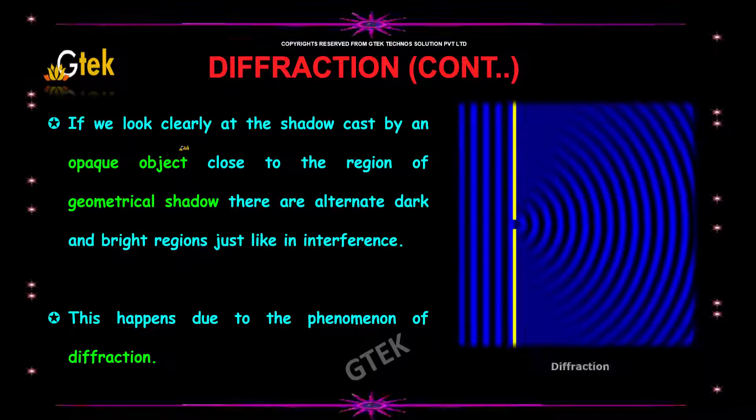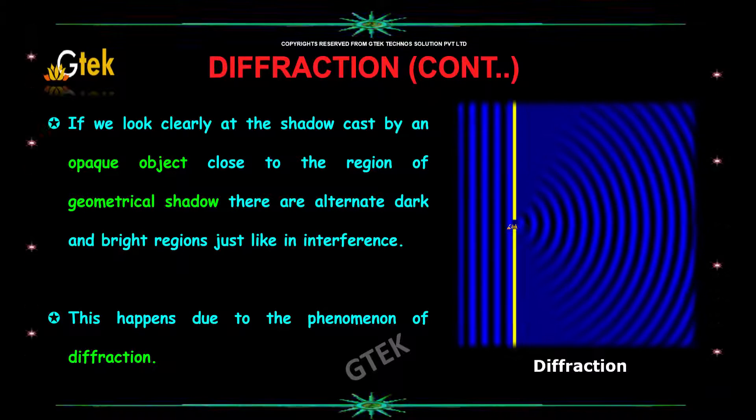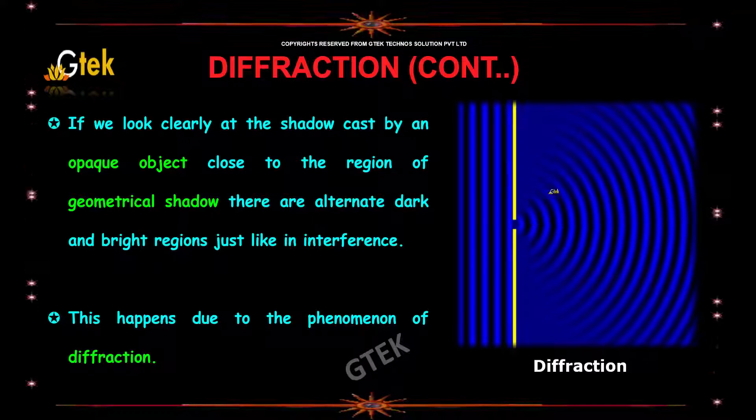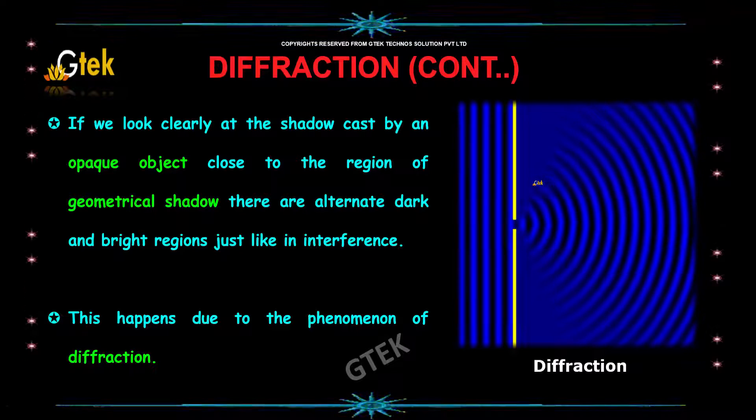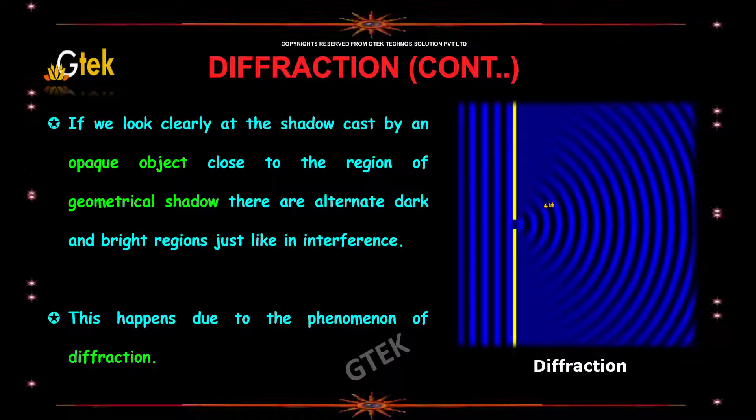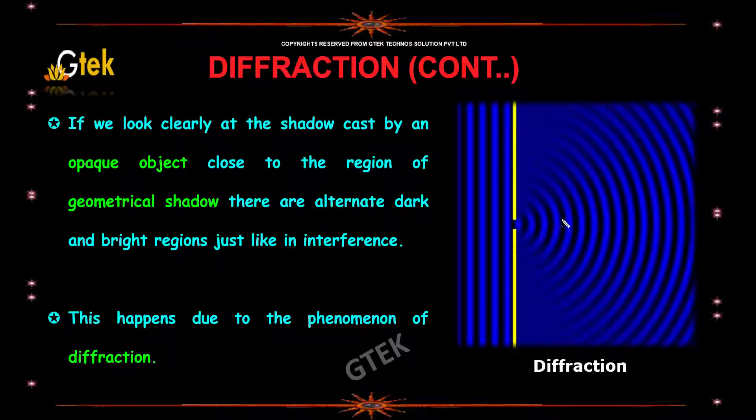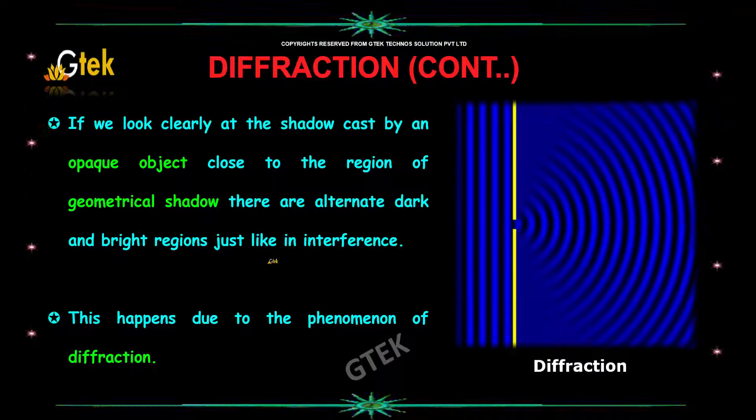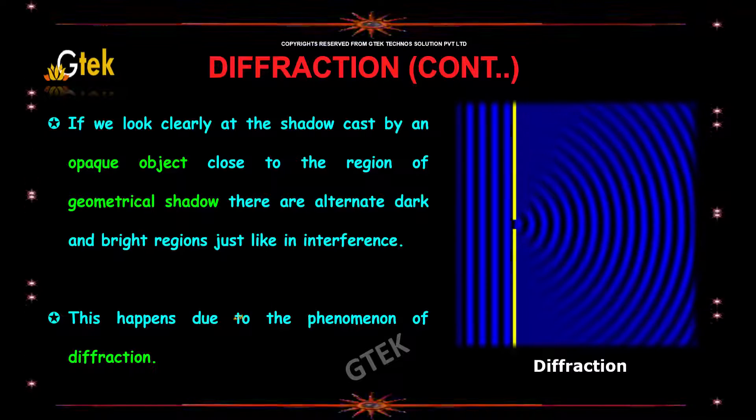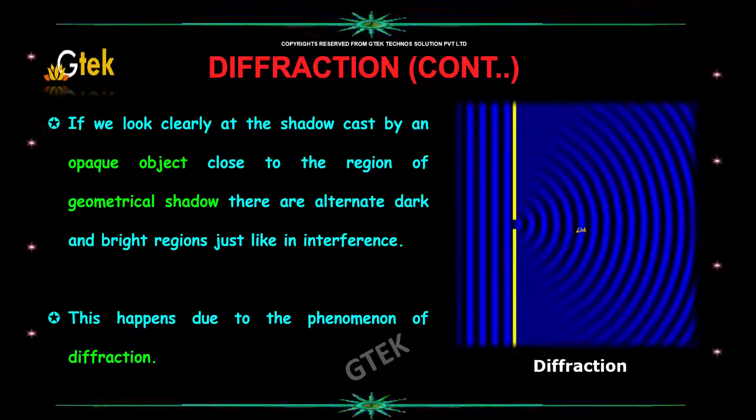If you look clearly at the shadow cast by an opaque object close to the region of geometrical shadow, there are alternate dark and bright regions just like in interference. This happens due to the phenomenon of diffraction.